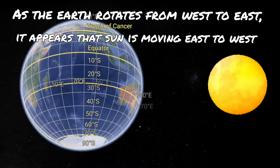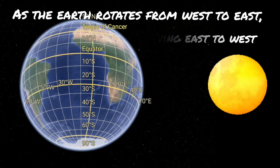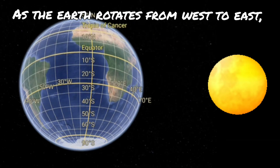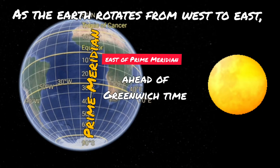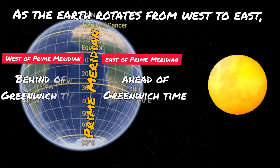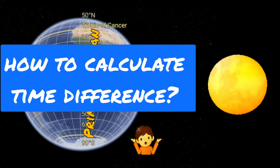As the earth rotates from west to east, it appears that the sun is moving east to west. Due to this, all the places to the east of the prime meridian will be ahead of Greenwich time, whereas all the places to the west will be behind it. Now the question arises about how to calculate the rate of difference between any two places.